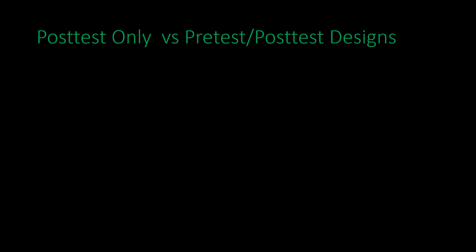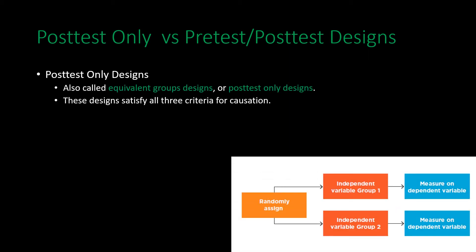In a post-test only design, you have the independent variable with two different levels — for example, note-taking via computer and note-taking via pen and paper. You randomly assign people to both groups so they have no choice in which group they are in, followed by measurement on the dependent variable such as how well they performed answering questions. These types of designs satisfy all three criteria for causation, so long as the experiment is well-designed and high internal validity is maintained.